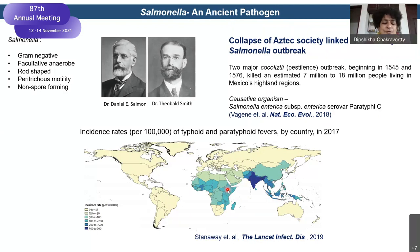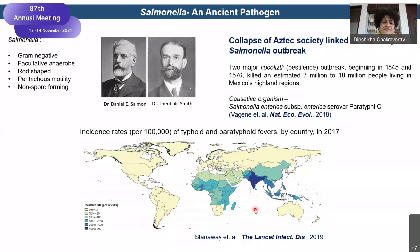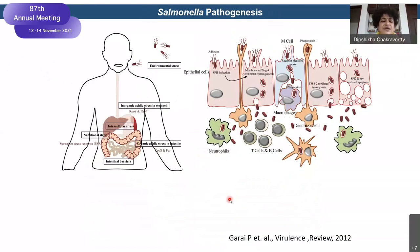The CDC has placed Salmonella in category two — bioterror category two — due to the very high morbidity and mortality caused by this pathogen. Many of us have suffered from typhoid fever, but the current typhoid bacteria is very different. How does typhoid happen? How does Salmonella get inside?